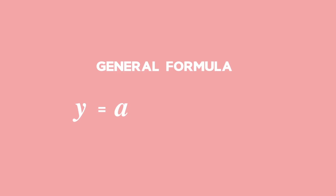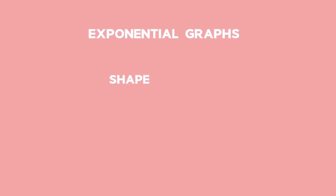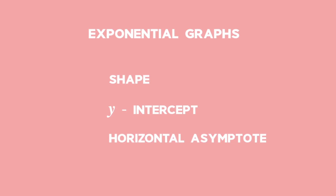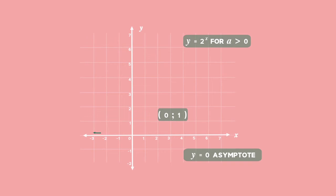Exponential functions have the general formula y equals a to the power of x, for a greater than zero. Exponential graphs can be recognized by their shape, their y-intercept and the horizontal asymptote. For example, the function y equals 2 to the x has a y-intercept of 1. It increases exponentially for positive values of x. For negative values of x, the exponential graph approaches y equals zero, which is the x-axis, but will never touch it. So the x-axis is the horizontal asymptote for the graph.